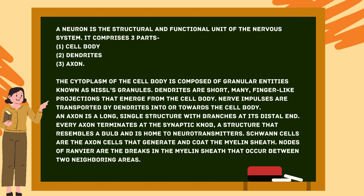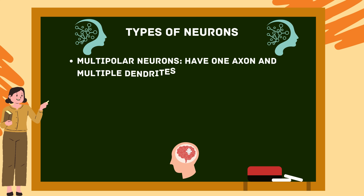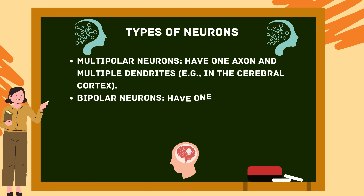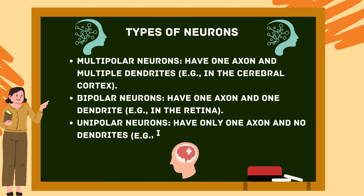Nodes of Ranvier are the breaks in the myelin sheath occurring between two neighboring Schwann cells. There are three types of neurons: multipolar neurons have one axon and multiple dendrites — for example, in the cerebral cortex; bipolar neurons have one axon and one dendrite — for example, in the retina; unipolar neurons have only one axon and no dendrites — for example, in the embryonic stage.